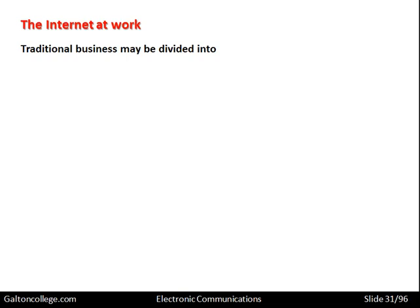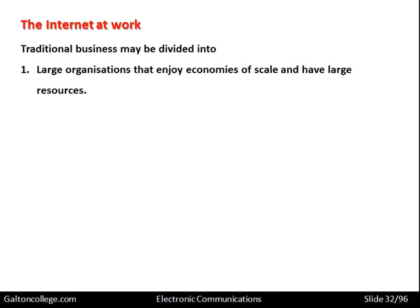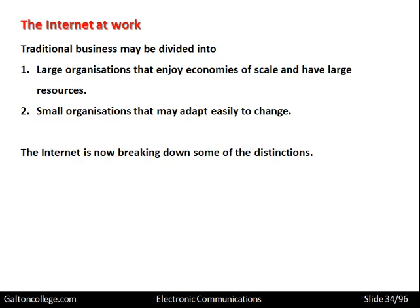The internet at work: traditional businesses may be divided into large organizations that enjoy economies of scale and have large resources — able to make bulk buying and negotiate good terms from banks. The other form is small organizations, which have an advantage because they can change very quickly, restructuring themselves from one line of production into another. Essentially, there are two forms: large and small. Now, the distinction between these is starting to break down because of the internet.